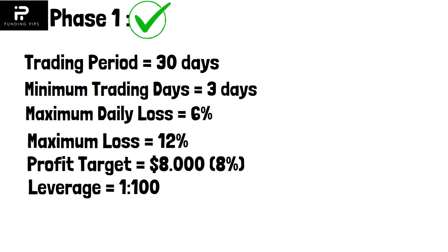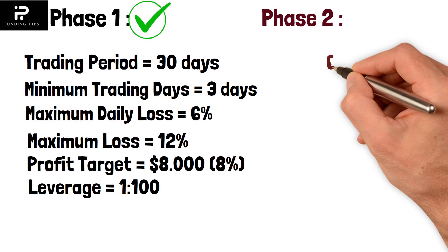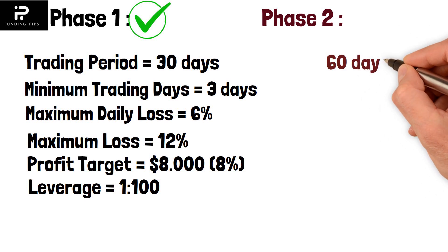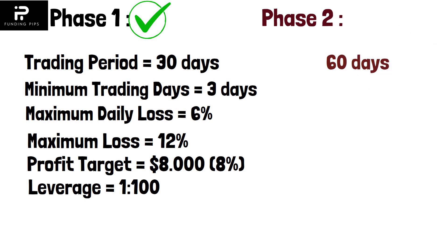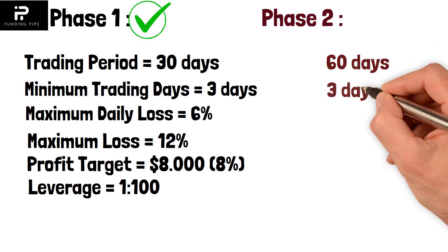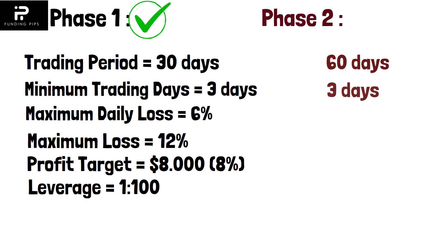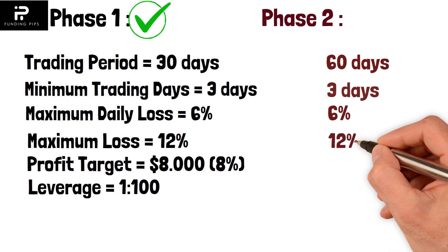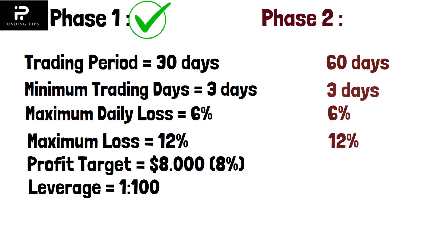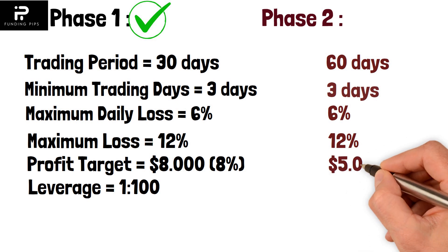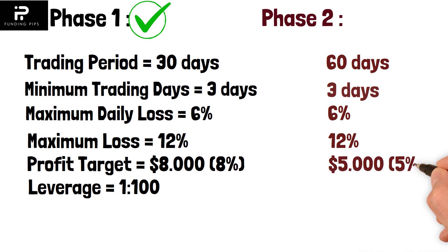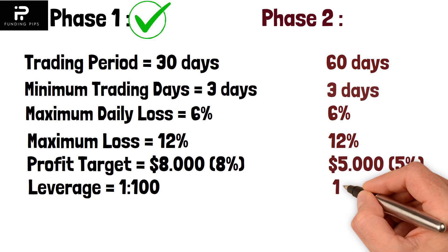If you pass Phase 1, you move to Phase 2. The trading period is 60 days, minimum trading days is 3 days, maximum daily loss is again 6% with the same calculation method, maximum loss is 12% fixed and static, profit target is 5%, and leverage is 1:200.